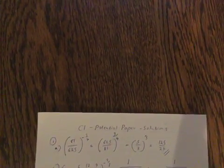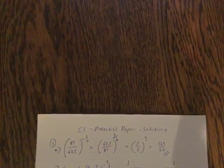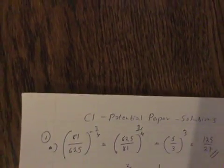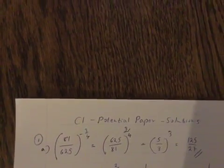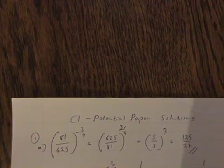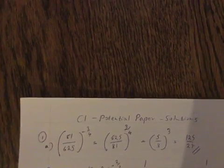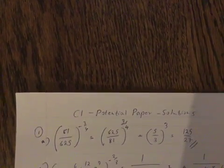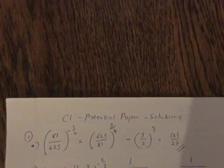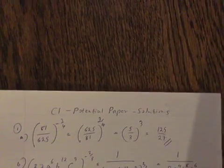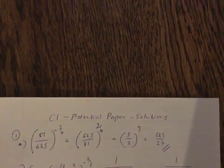Question 1a: 81 to the power of minus 3 over 4. If you flip the fraction in the index, it becomes 625 over 81 to the 3 over 4, which becomes 5 over 3 cubed, which is 125 over 27.